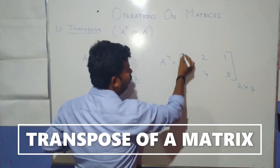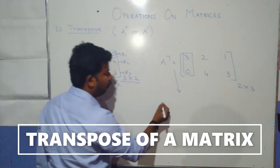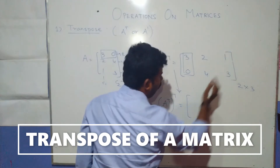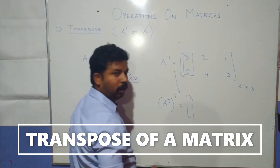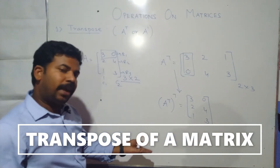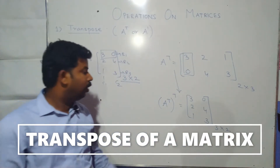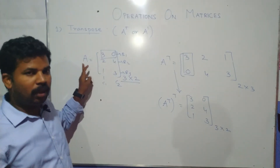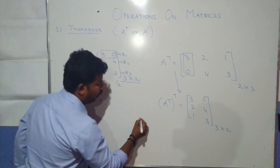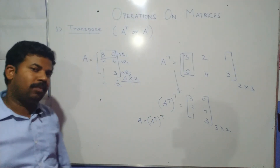One more thing: if you do the transpose of the transpose again — that means A power T, whole power T — then the first row is written as the first column: three, two, one, and the second row as the second column: zero, four, three. The order is three rows and two columns. That means when you do the transpose of a matrix twice, you get the same matrix. This property is: A equals A power T whole power T.